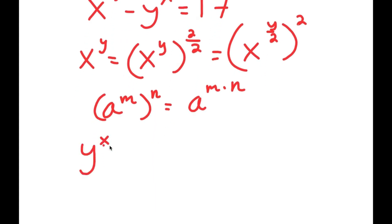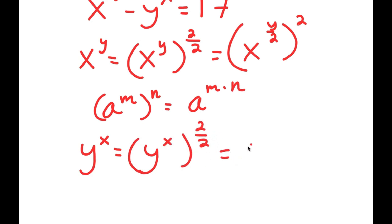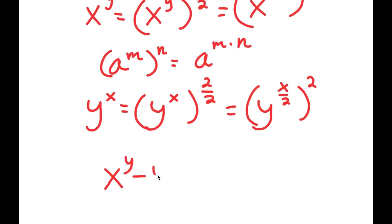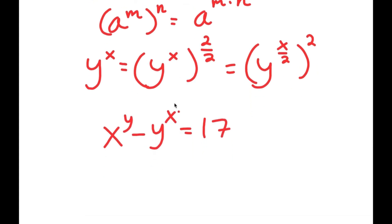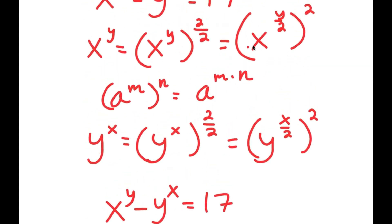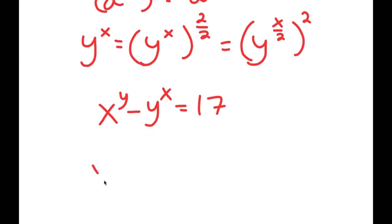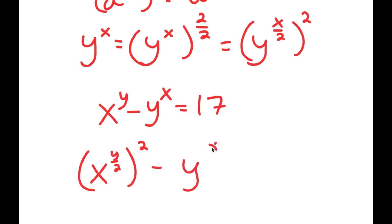Now, y to the power of x, I can also change this up. So y to the power of x, I can rewrite that as y to the power of x to the power of 2 over 2. And this I can rewrite as y to the power of x over 2 to the power of 2. Now, from here, remember my original equation was x to the power of y minus y to the power of x equals 17. I can replace x to the power of y with x to the power of y over 2 to the power of 2, and y to the power of x with y to the power of x over 2 to the power of 2. So now I get x to the power of y over 2 to the power of 2 minus y to the power of x over 2 to the power of 2 is equal to 17.